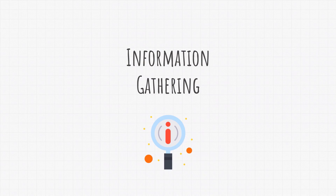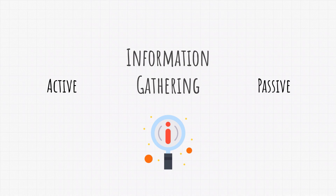Welcome back. It is time we learn in detail what information gathering is and how we can perform it. We already know that information gathering is the first step in penetration testing — it is the act of gathering data about our target. It can be any type of data that we might find useful for a future attack. There are two types of information gathering: active and passive. We talked briefly about them, but now it is time to fully explain both.